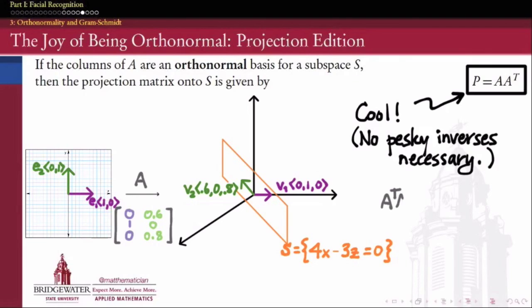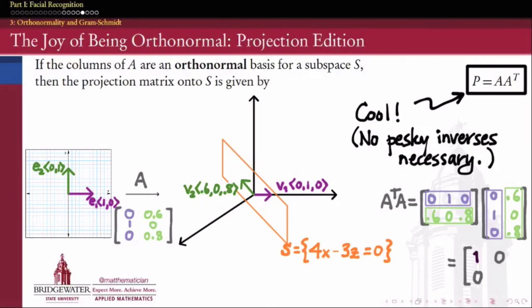So when I build my projection matrix using those vectors as the columns, and I compute A transpose A as if I were to use the general formula for P, I'll notice that A transpose A gives me, if I multiply first row, first column, I get 1. First row, second column, I get 0. Second row, first column, 0. Second row, second column is 0.36 plus 0.64. Oh look, it's 1. So A transpose A, that matrix which we would have to otherwise invert in our projection formula, is nothing more than the identity matrix.